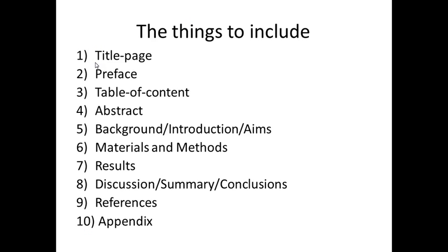Okay, so the things that should be included, I have now divided into ten different things. You can sometimes divide them in more and sometimes in less, but basically there are three parts. The first part is the initial stuff, which is the title page, the preface, table of content, and abstract.